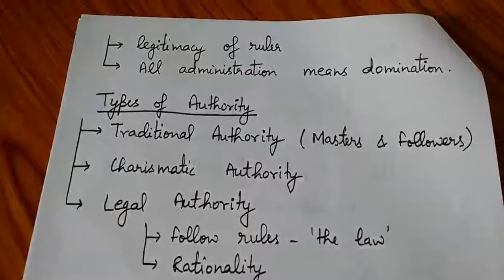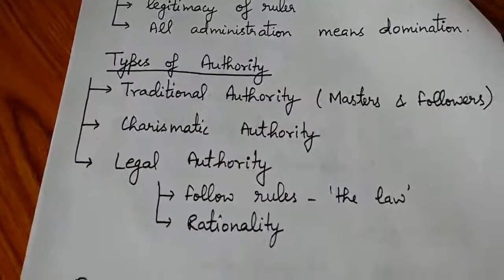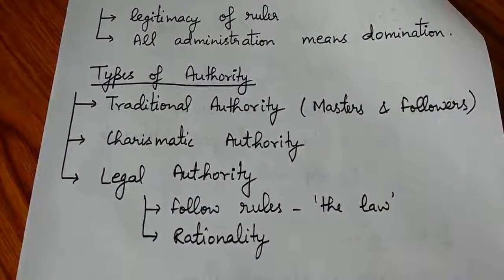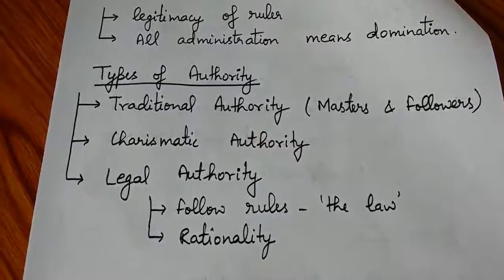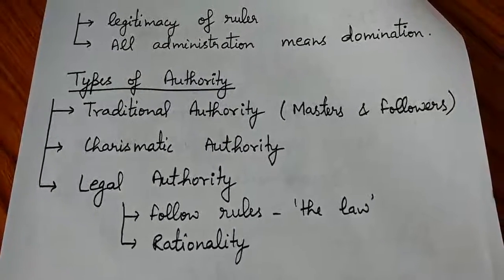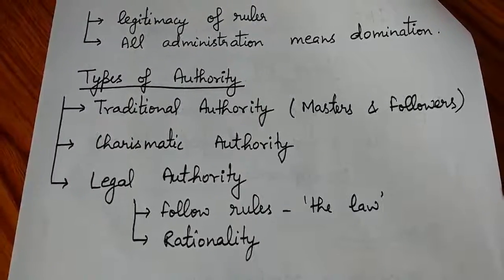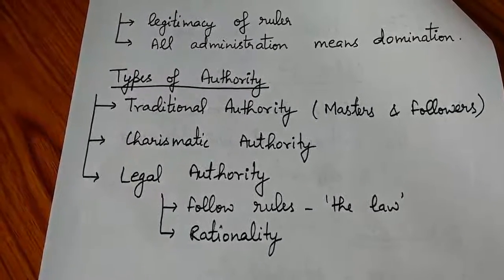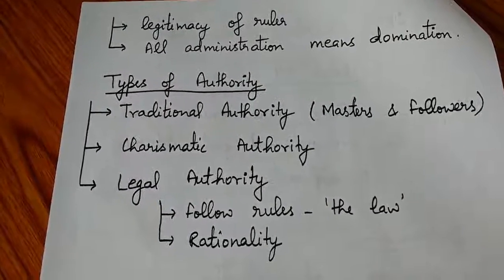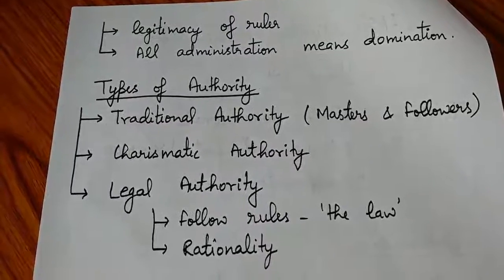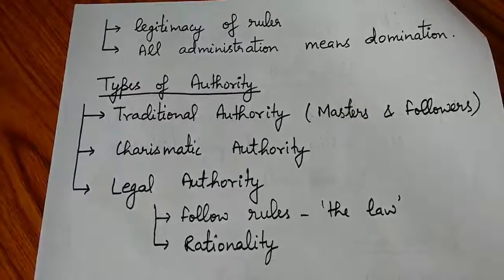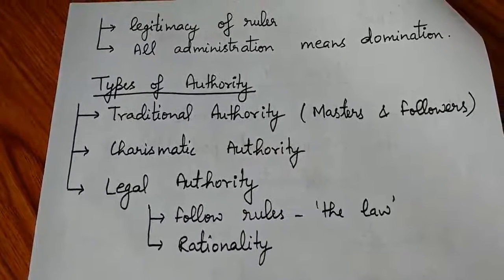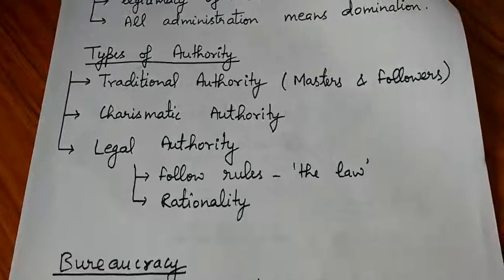The first type of authority is traditional authority. The example is kings or feudal rulers — they were masters with followers including close relatives and ministers. The king was a monarch who decided his officials in a closed system. People accepted this authority because they believed the king held divine or traditional power, and that his son would be king after him.